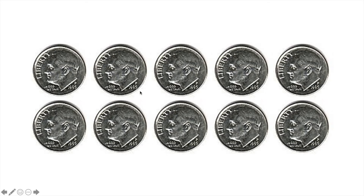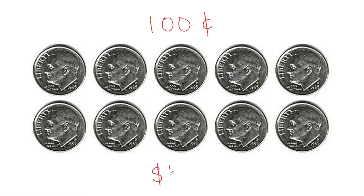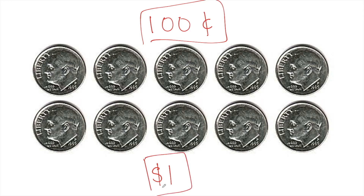As you talk about each coin — what coin is this, how much is it worth, what do we skip count it by — you want to tell kids that 100 cents is the same as one dollar. Anytime I have 100 cents, another way I can say that is that I have one dollar. Or if I have one dollar, another way I could say it is that I have 100 cents.